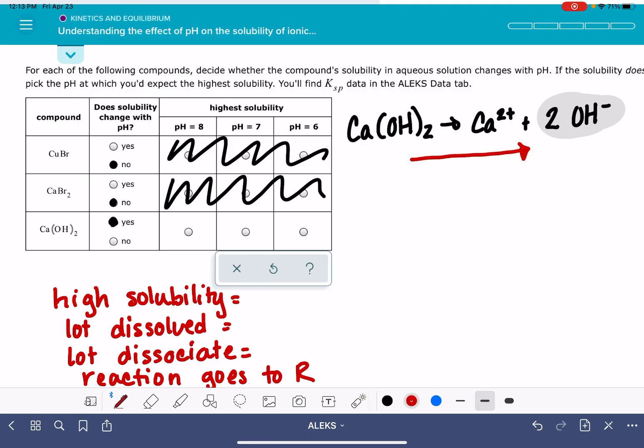To get the reaction to move in this direction, specifically thinking about pH, we want to focus on the OH-. To get the reaction to move in that direction, we want to remove OH-. There's a lot of ways that we could get the reaction to go in this direction, but thinking about pH, focusing on OH-, ignoring calcium, removing OH- would get the reaction to move in this direction.